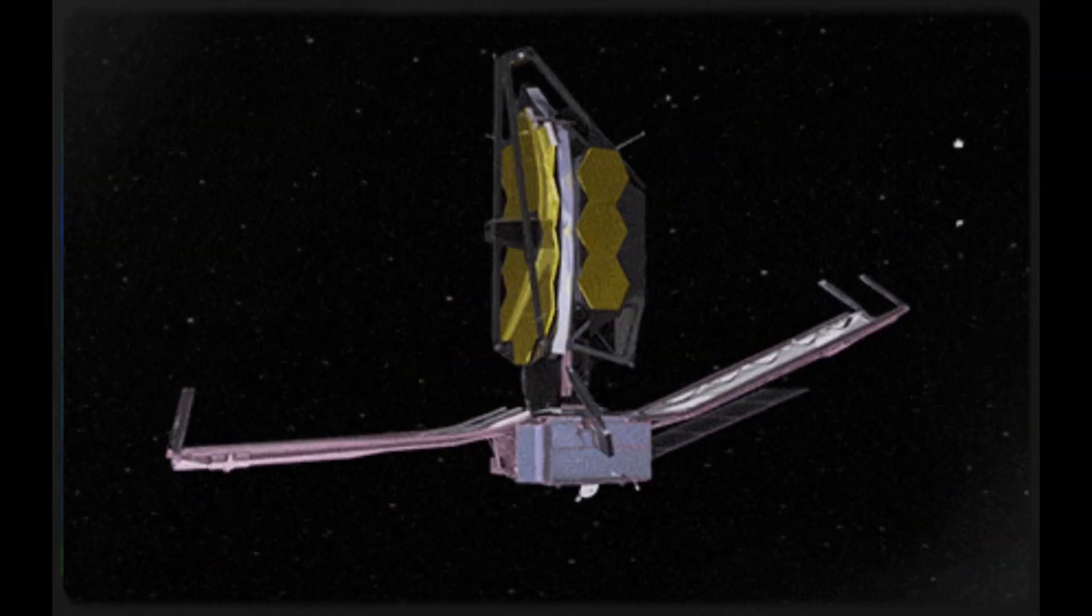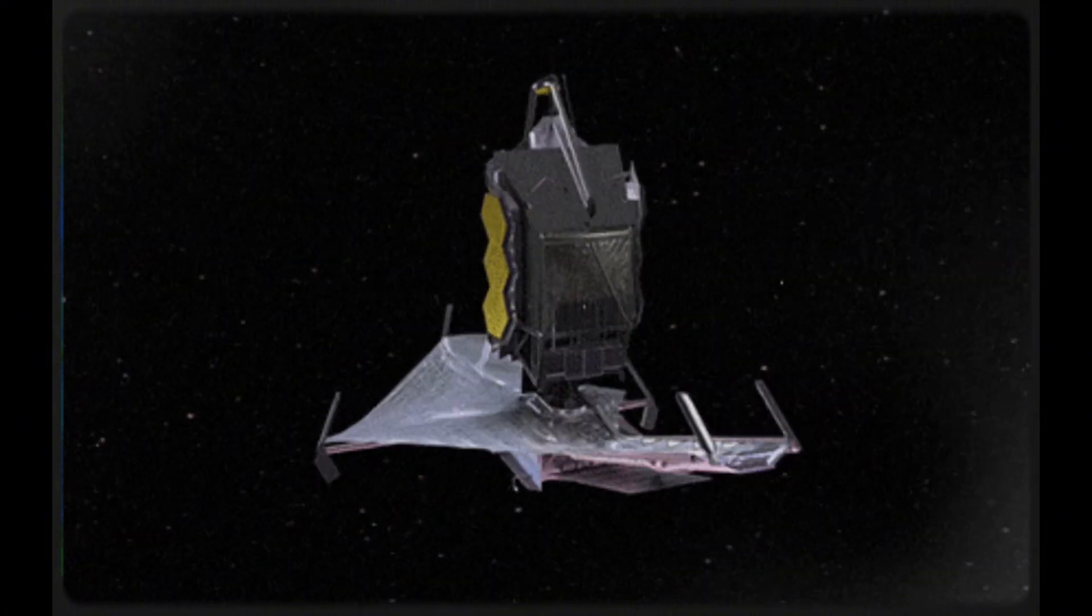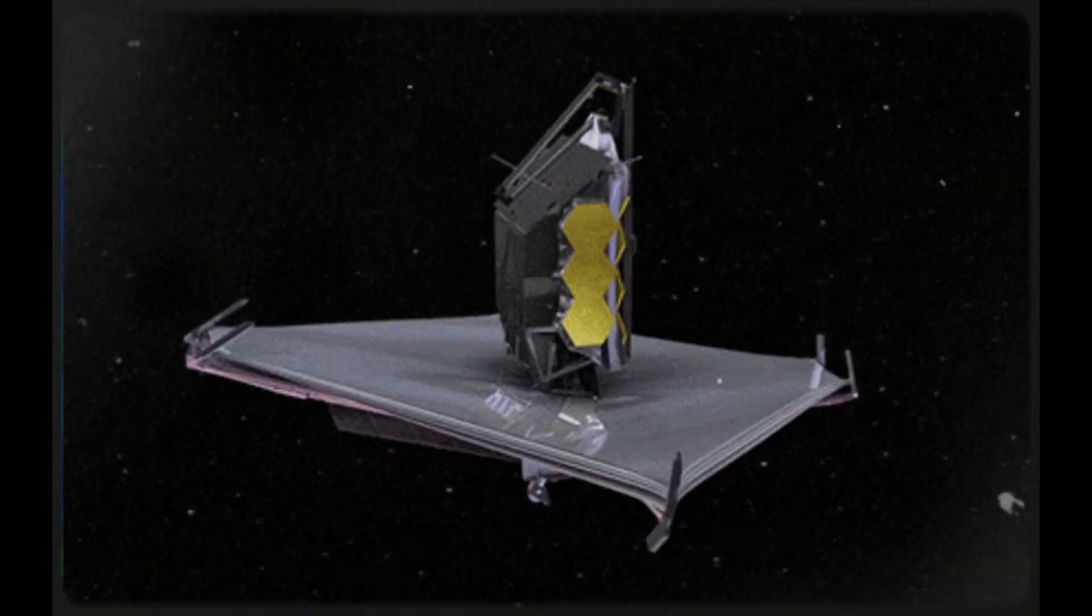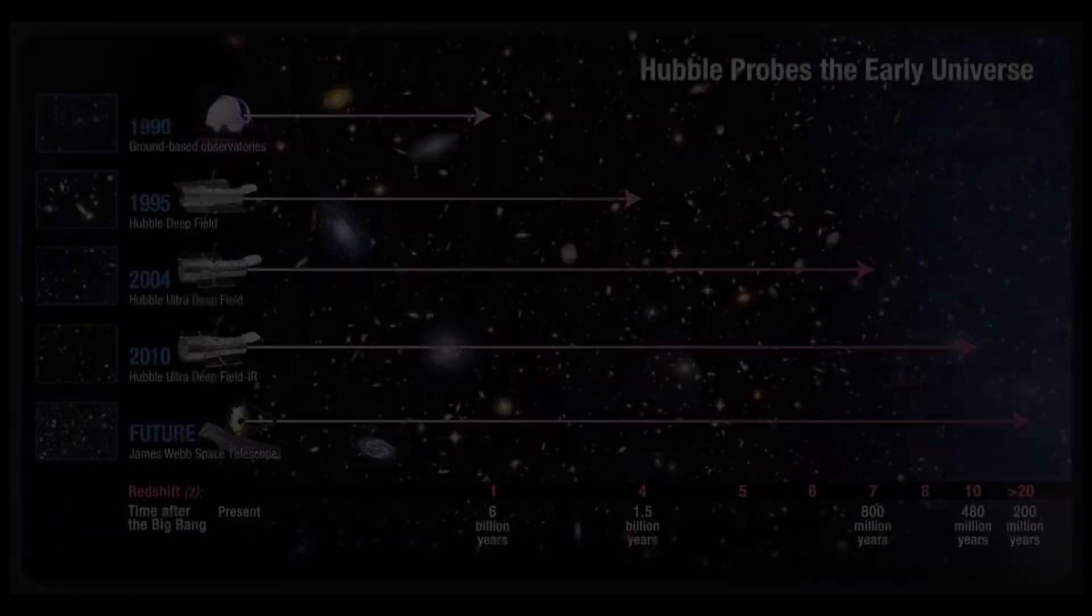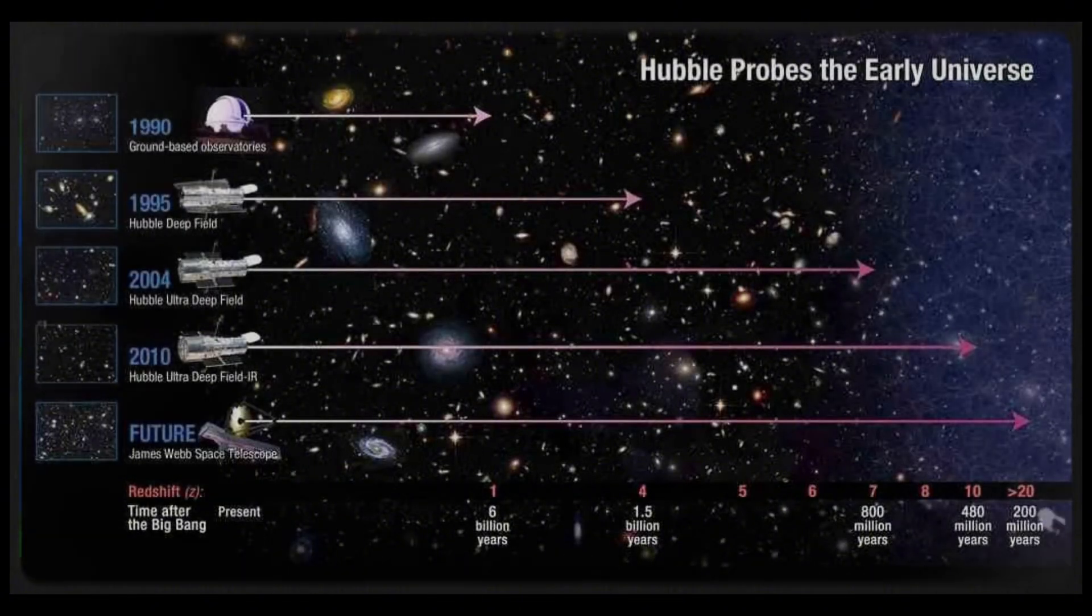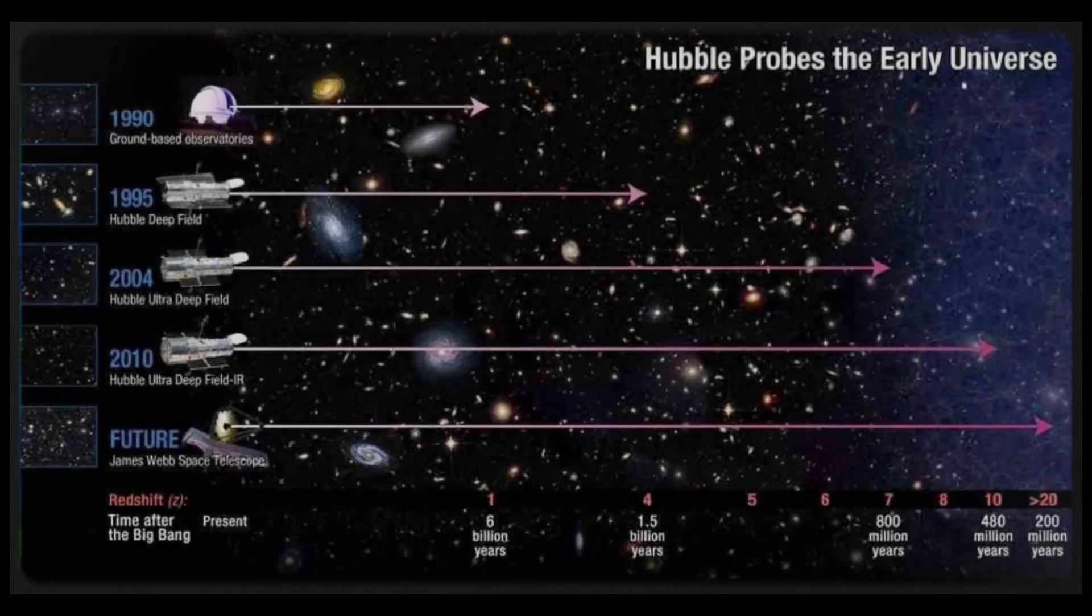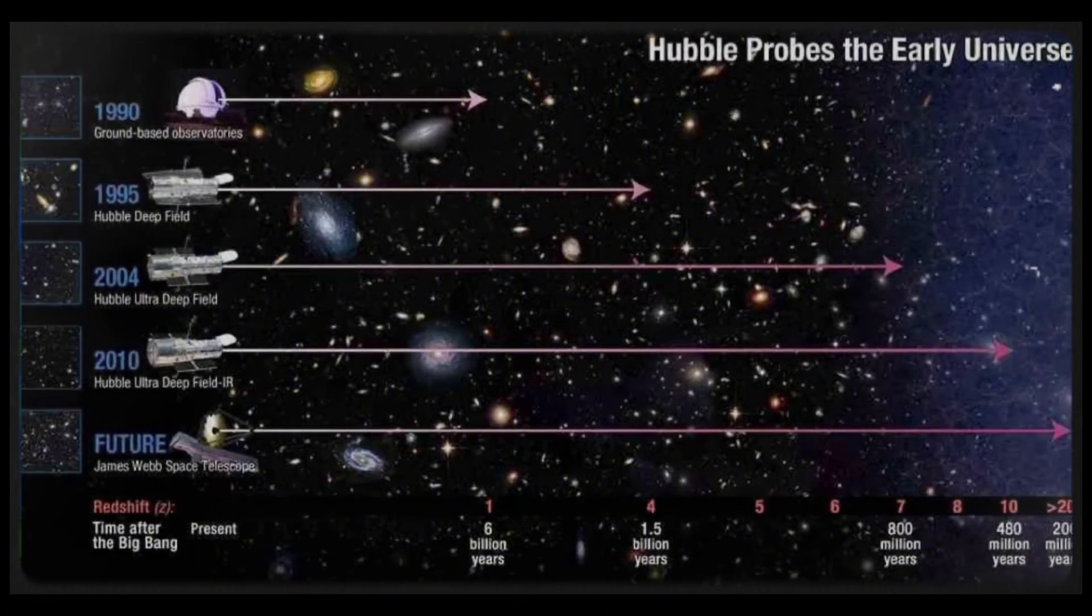As soon as the telescope became operational in late June 2022, scientists began discovering thousands of new galaxies that were older and more distant than any previously known. Some of these galaxies might have been identified over 150 million years earlier than the largest ones detected by Hubble.